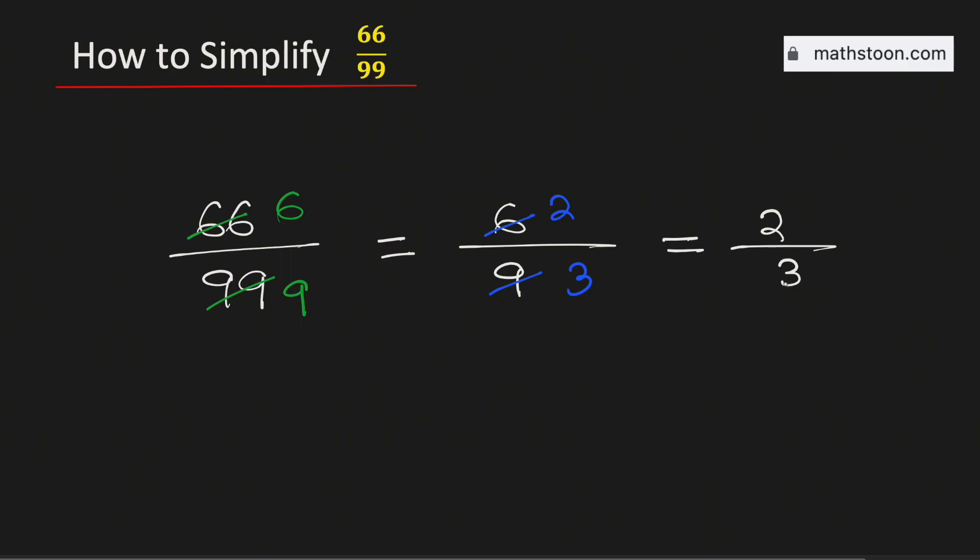As both 2 and 3 are prime numbers, this fraction cannot be simplified further. Therefore, 66 over 99 simplified is equal to 2 over 3, and it is its lowest term.